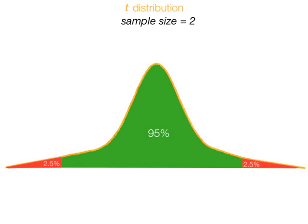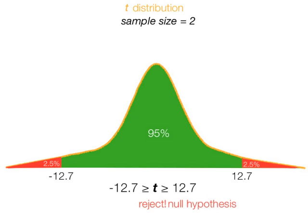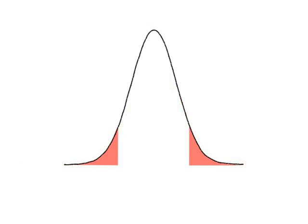Now imagine that the sample size is equal to 2, which is very small. We would set up a critical region where the t-score would be negative 12.7 and 12.7. So we say if t is less than or equal to negative 12.7 or if t is greater than or equal to 12.7, we reject. And what do we reject? We reject the null hypothesis.